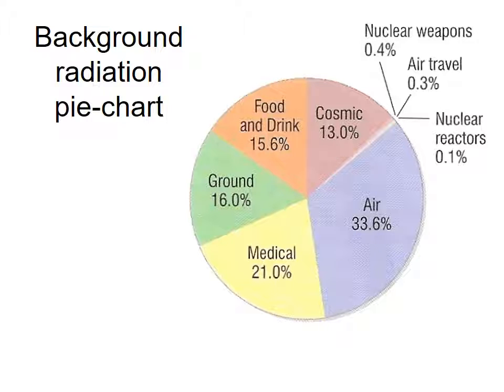So this is the background radiation pie chart. As you can see, the largest amount comes from air with 33.6%. And there's a minimal amount from nuclear weapons, but most of it comes in air, medicine, and in the ground, and food and drink.